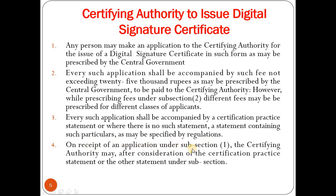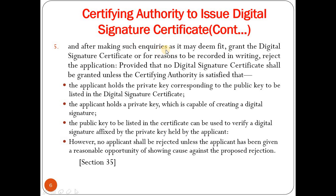Upon reception of the application, the certifying authority may, after consideration of the certification practice statement and after making such enquiries as it may deem fit, grant the digital signature certificate or, for reasons to be recorded in writing, reject the application. Once the CA receives the application along with the practice statement, it can accept or reject the digital certificate. On rejection, the CA must give in writing the reason for rejection.